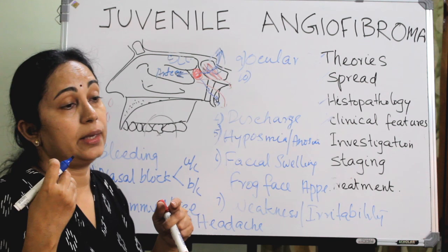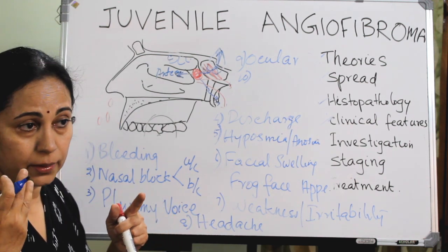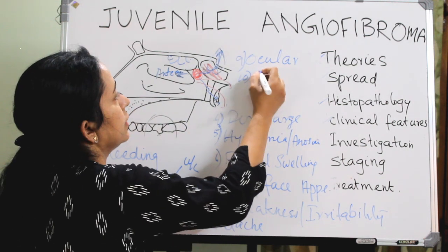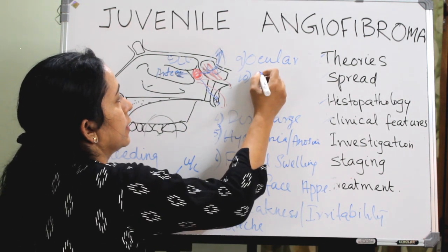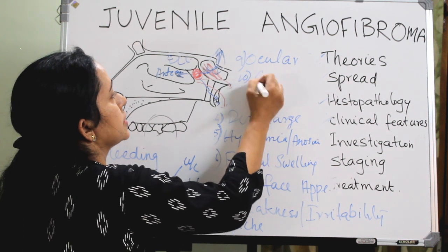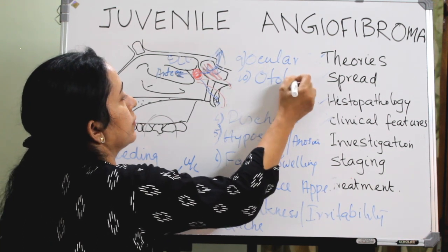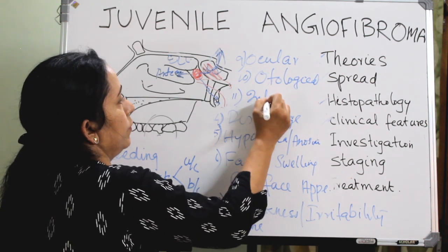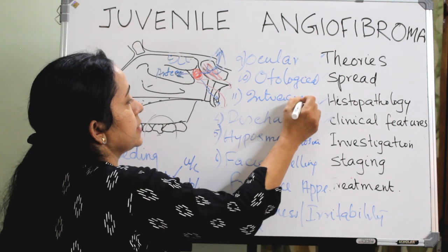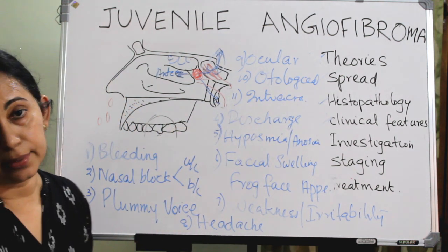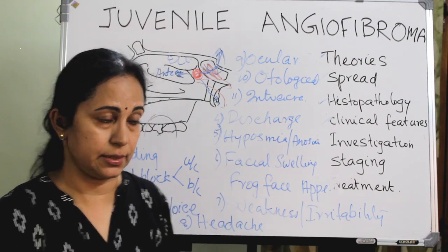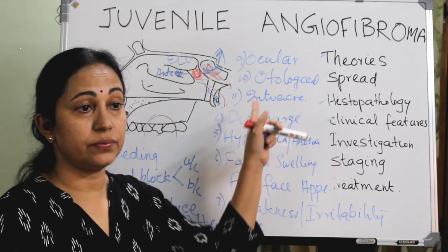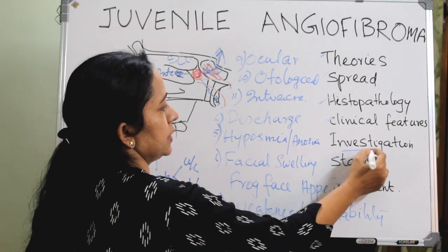Extension to the nasopharynx obstructs the Eustachian tube, leading to recurrent secretory otitis media and conductive hearing loss — producing otological symptoms. Intracranial extension can cause headache, loss of consciousness, or repeated episodes of altered sensorium. These are the clinical features of JNA, and the next topic is investigations.